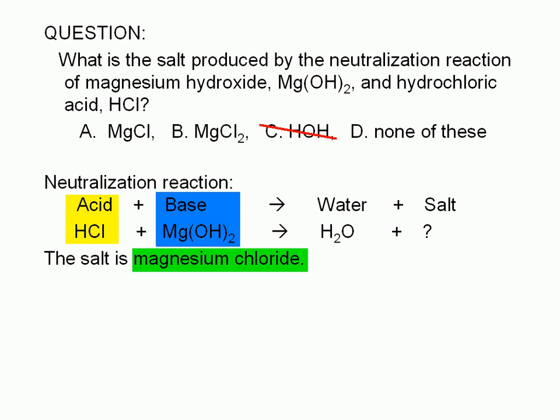The cation is the magnesium ion, and the anion is the chloride ion. Since magnesium has a charge of +2, and chloride has a charge of -1, the formula of magnesium chloride is MgCl2.